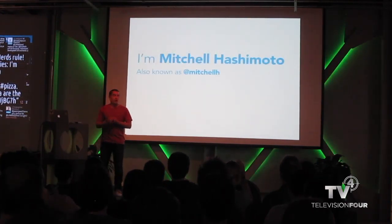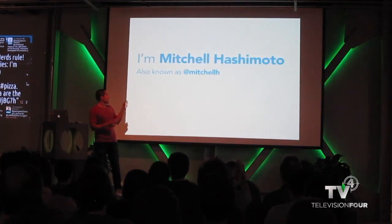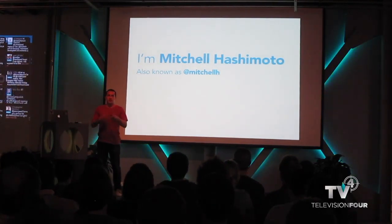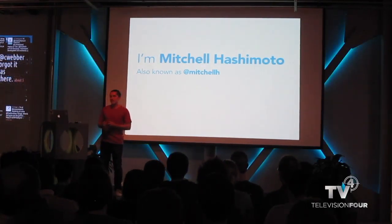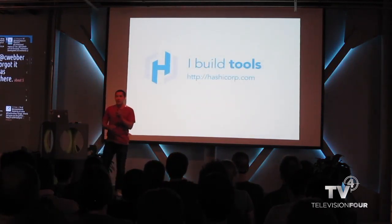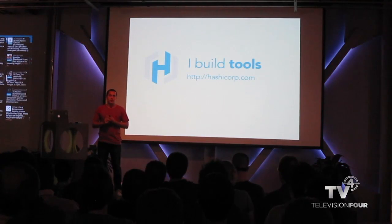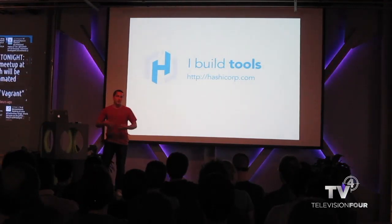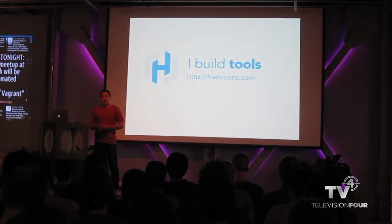I'm Mitchell Hashimoto. This slide's a little redundant, but it has my Twitter handle — that's the easiest way to talk to me. I build tools. I started my own company in November and I'm just focusing on building ops tools. That includes Vagrant and some other stuff, and it's awesome.